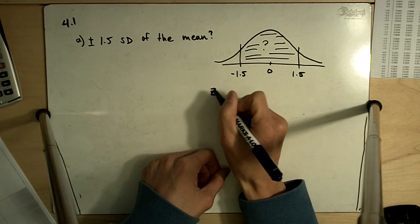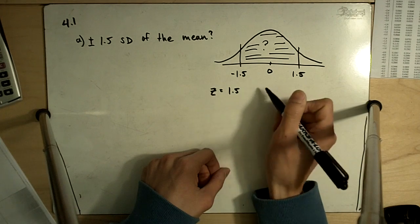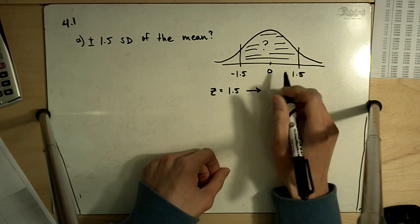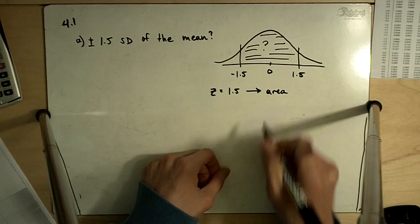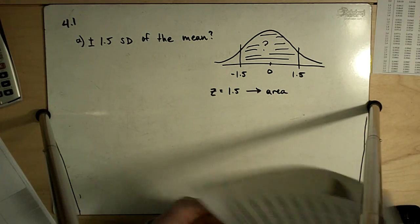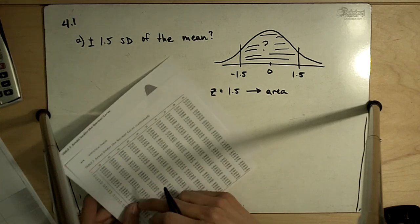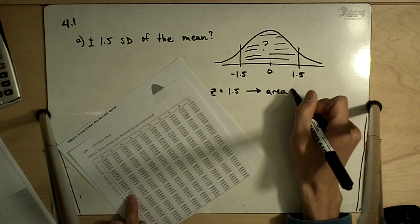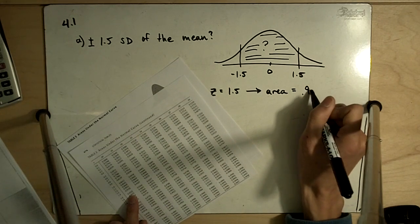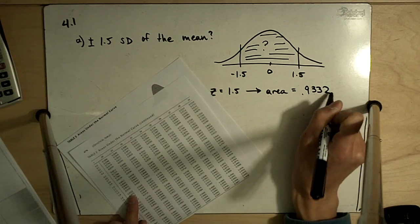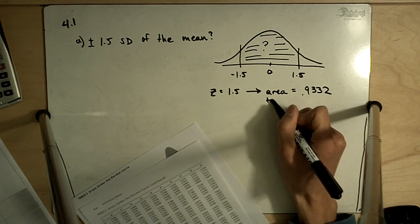We look up Z equal to 1.5, and that corresponds to an area to the left. 1.50 is equal to 0.9332. That's the area to the left.